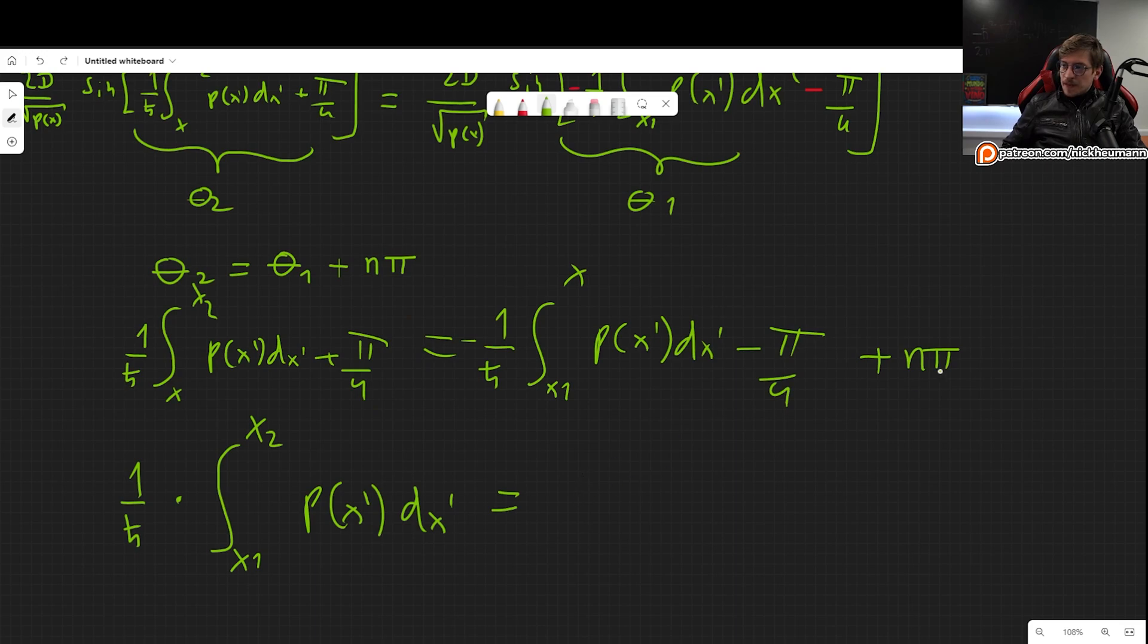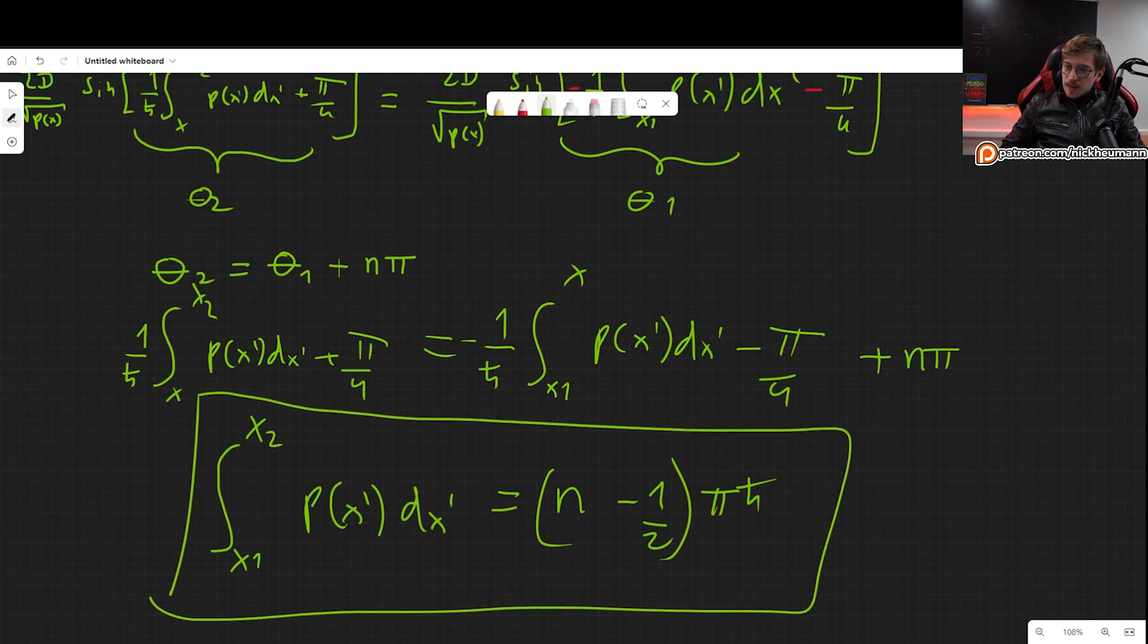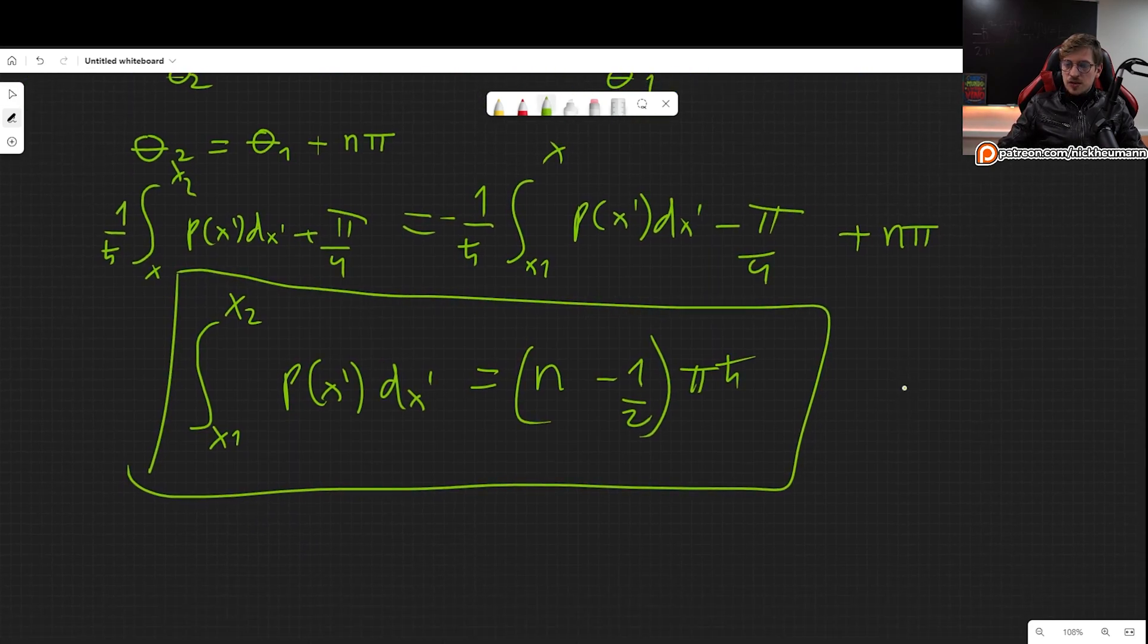Now we can subtract this, put it on the right hand side and factor out pi, so we get n minus two pi over four, which is one half times pi. And finally we multiply by h-bar, and this is our result.